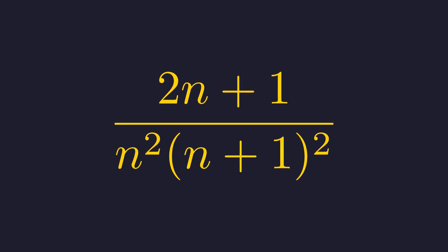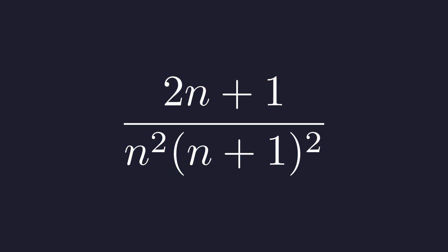Notice that the numerator 2n+1 can be expressed using the terms in the denominator. Specifically, let's consider the difference of the square of n+1 and the square of n. This is going to be the key insight.